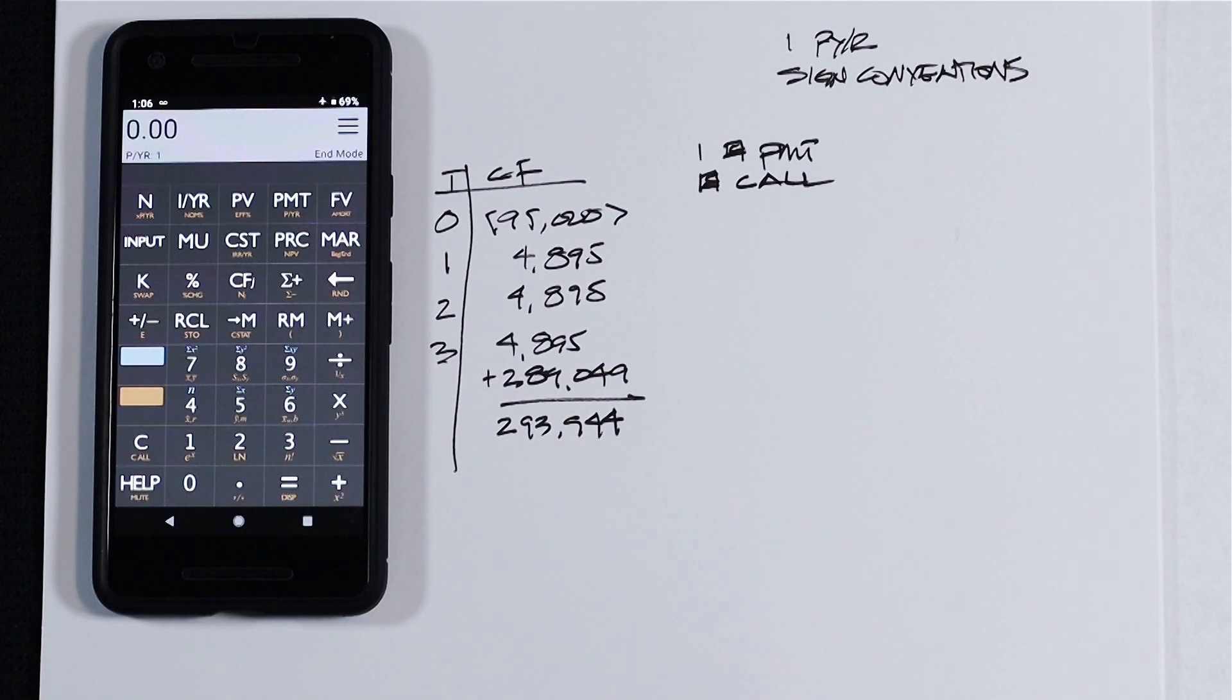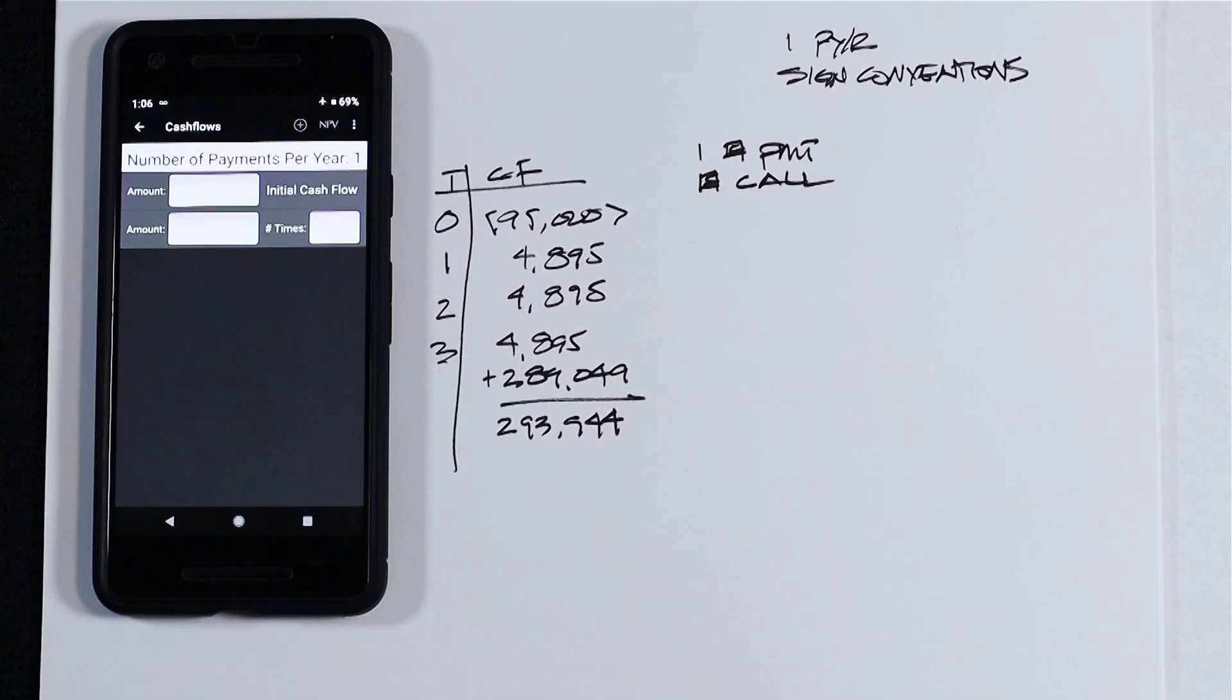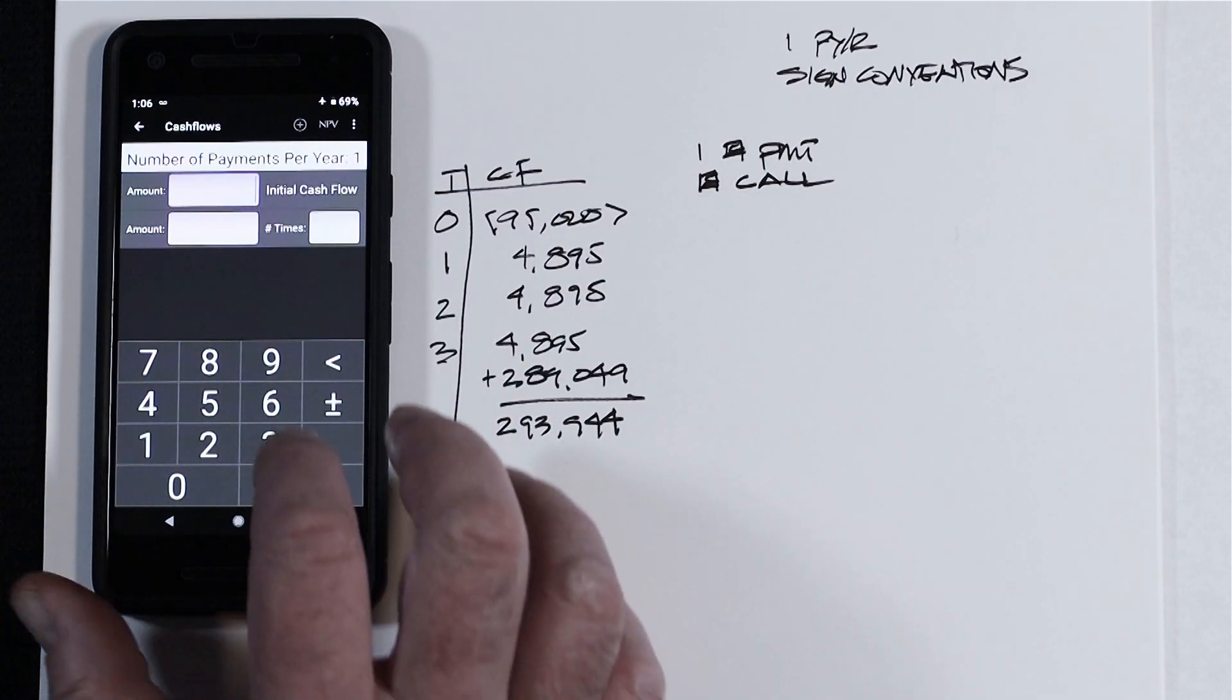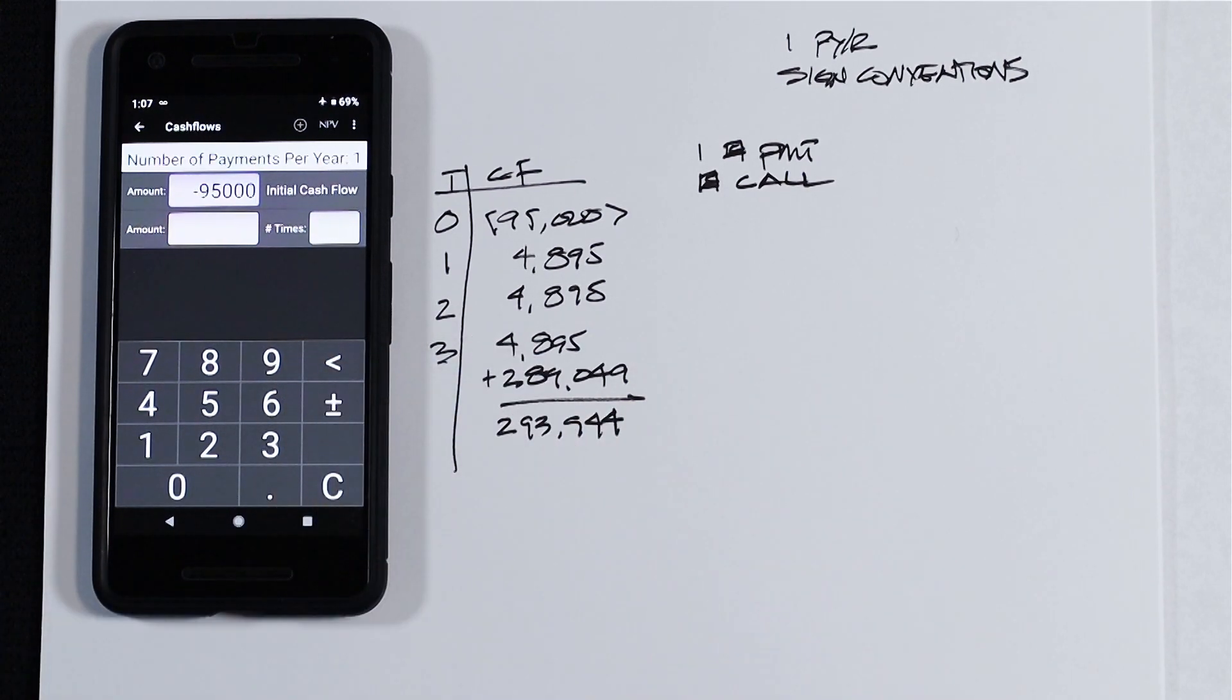Now to open up this app with a separate sub-menu, just tap the CFJ button, and you're going to see the initial cash flow and one time period available for you in the display. So tap into the first display for the initial cash flow and type in $95,000 plus or minus. That first flow is negative.